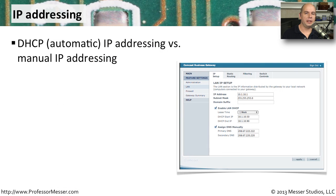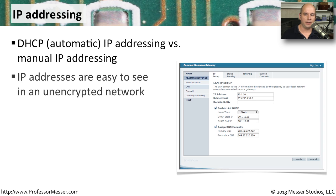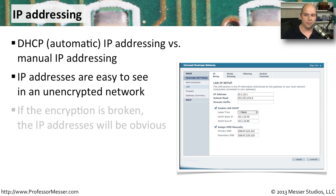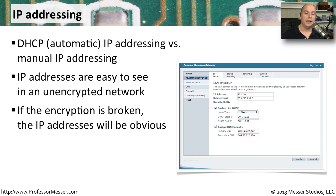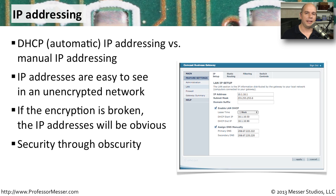Another technique some security administrators use is static IP addressing instead of automated DHCP addressing, and this applies to both wired and wireless networks. On an unencrypted network, IP addresses are visible in the clear, so it becomes easy for someone to plug in, automatically get an IP address, and communicate on the network. This is not really a security feature so much as a small form of access control — security through obscurity again. Someone who knows what they're doing can manually set addresses on their computer and still gain access to the network.